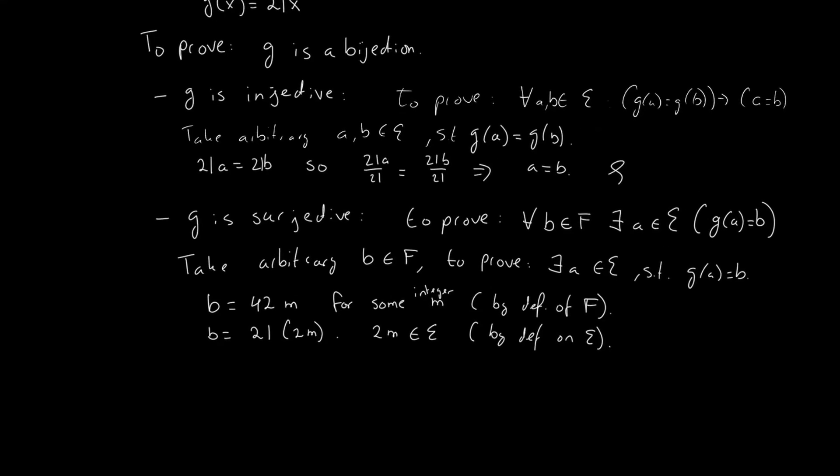Aha! So that means that there is indeed an a such that g(a) is b, namely a equals 2m in this case.